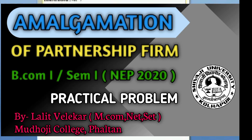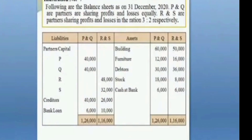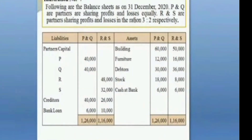P, Q, R and S are partners in two separate partnership firms. P and Q are partners sharing profits and losses equally. R and S are partners sharing profits and losses in the ratio 3 is to 2.